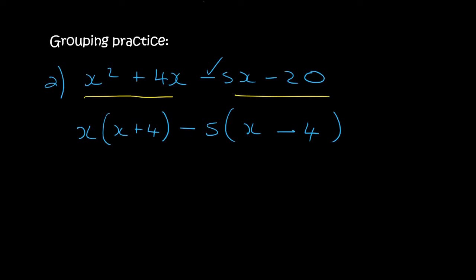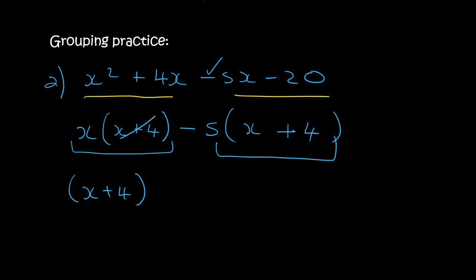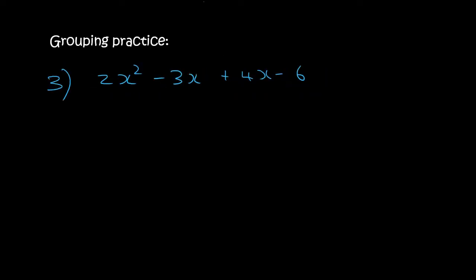It must always be able to become the same as what it was. So here I've got x plus 4 and x plus 4, so I can take that out as a common factor, and then what we're left with is x minus 5. Now in the next question, in the first two terms 2 and 3 are not common, but we can take out an x and so we'd be left with 2x minus 3.